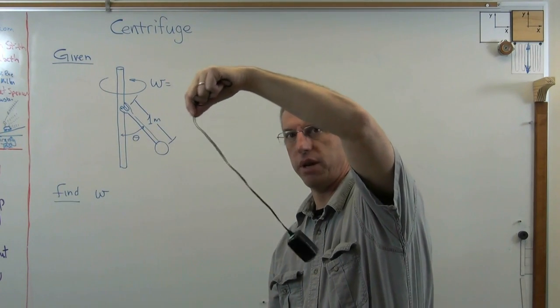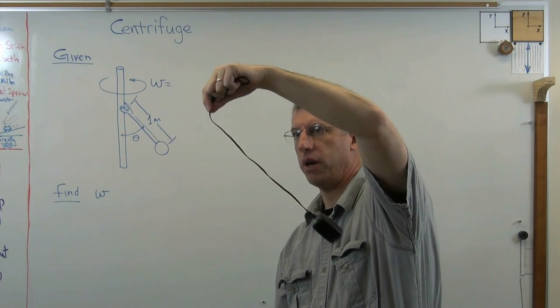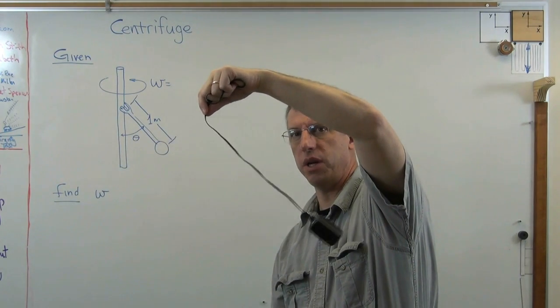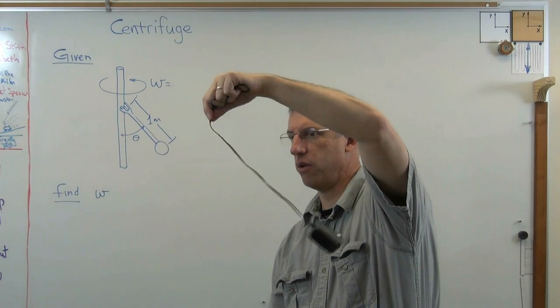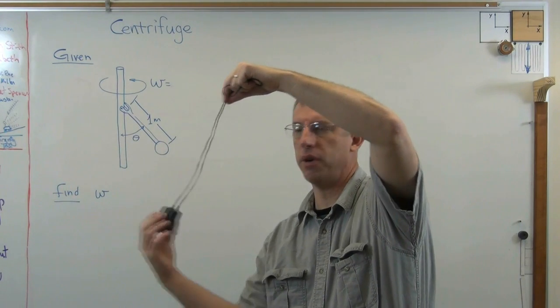If I spin this without hitting myself, there we go. I've got a nice steady rotational speed and it's pretty clear that the string, or the wire in this case, makes some angle from the vertical.